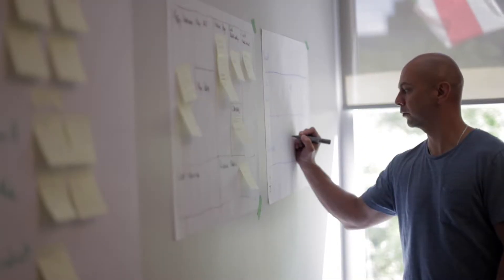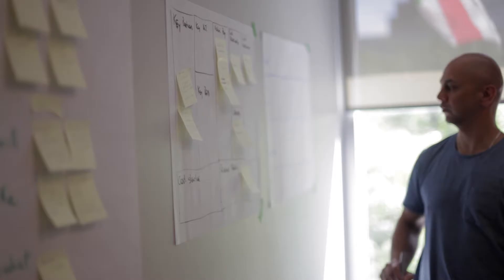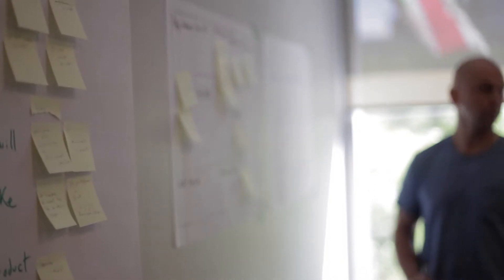The second topic is on the collaboration with the development team through the Scrum events. How do I collaborate with the team? How do I manage my product backlog? How do I collaborate with the different stakeholders that are involved?